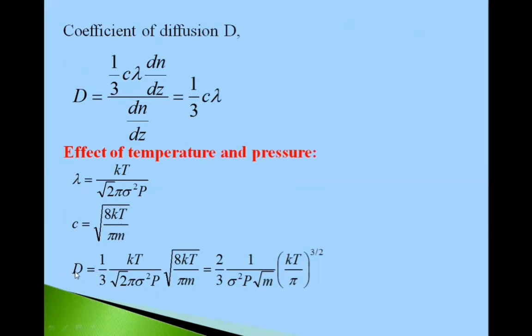So D is equal to one third C lambda. Put values of C and lambda from these equations: one third KT upon root 2 into pi sigma square P into under root 8 KT upon pi M. It gives 2 upon 3, 1 upon sigma square P under root M into KT by pi raised to 3 by 2.